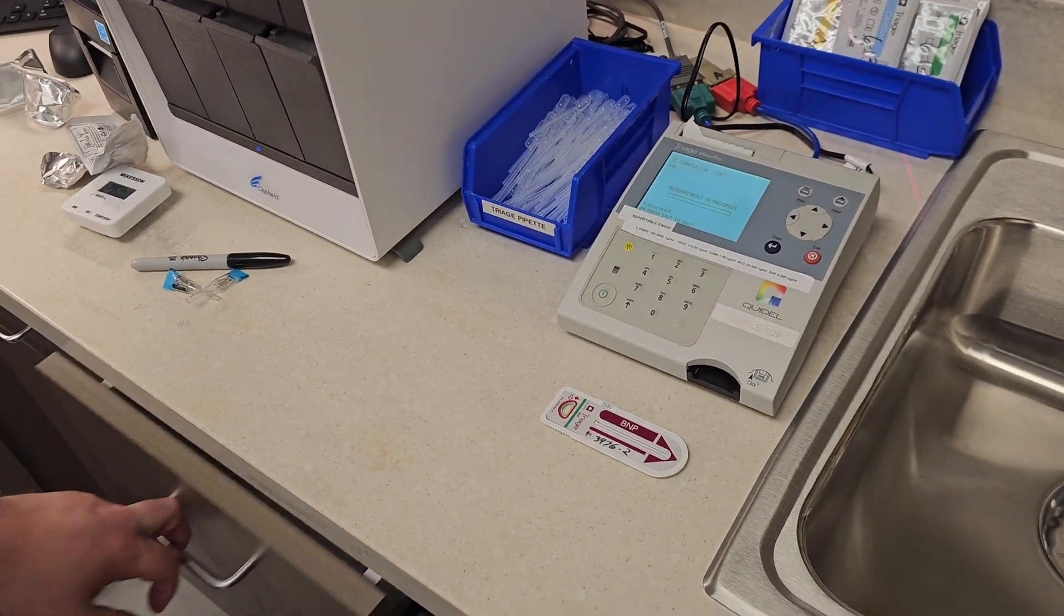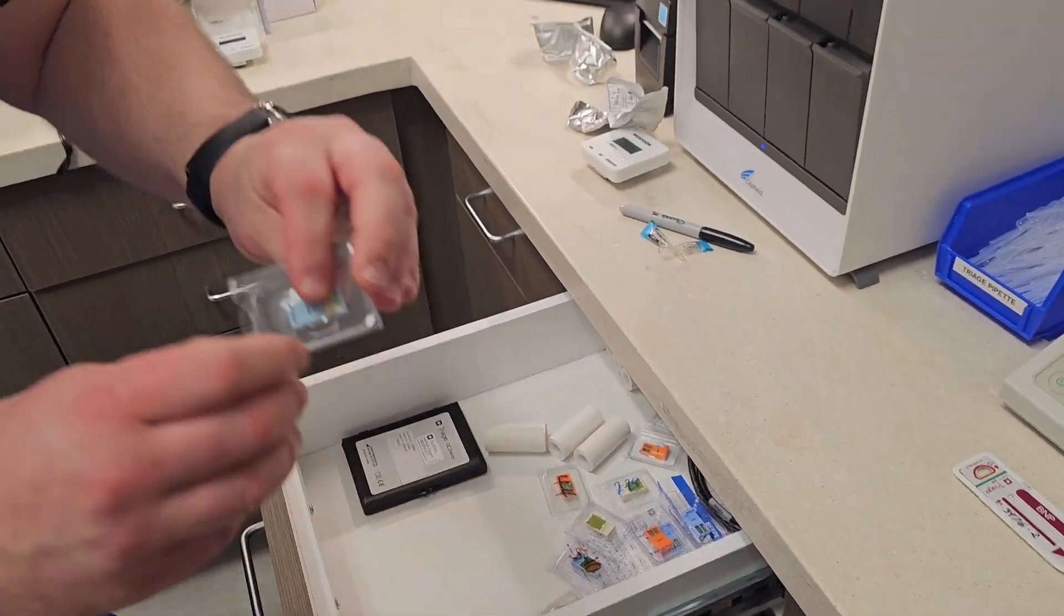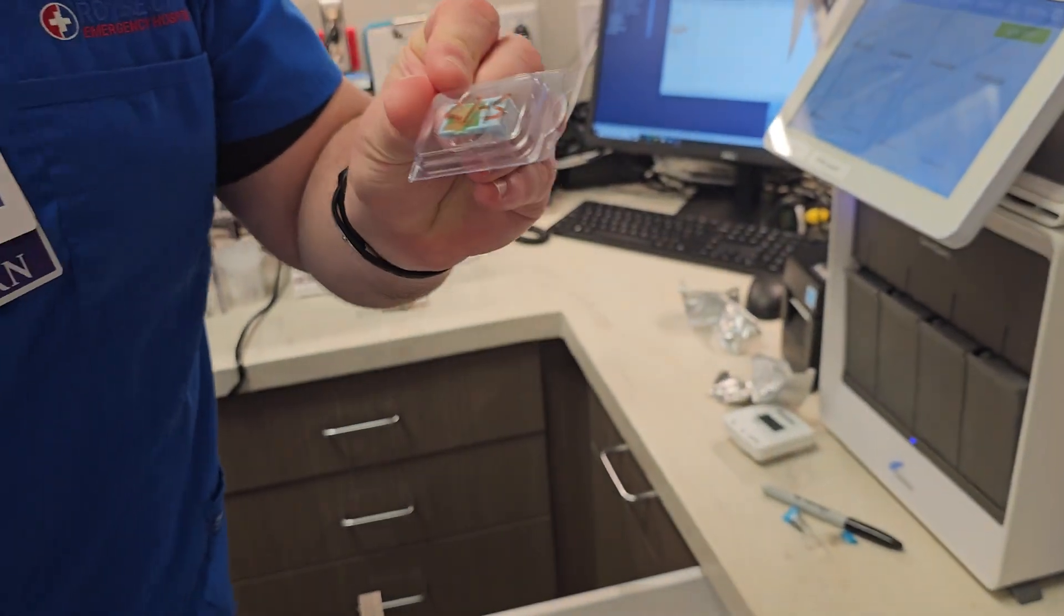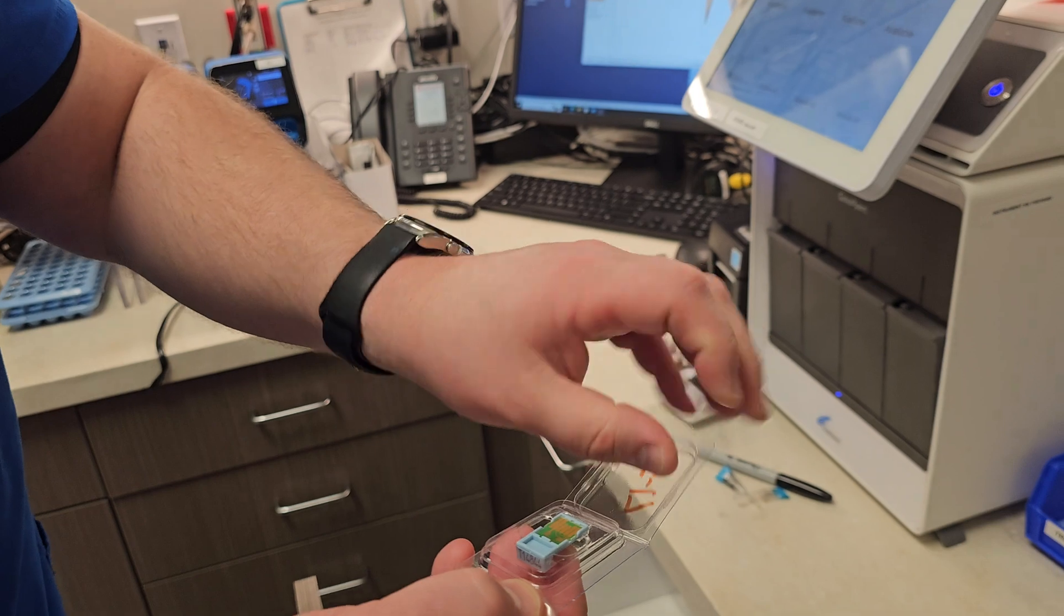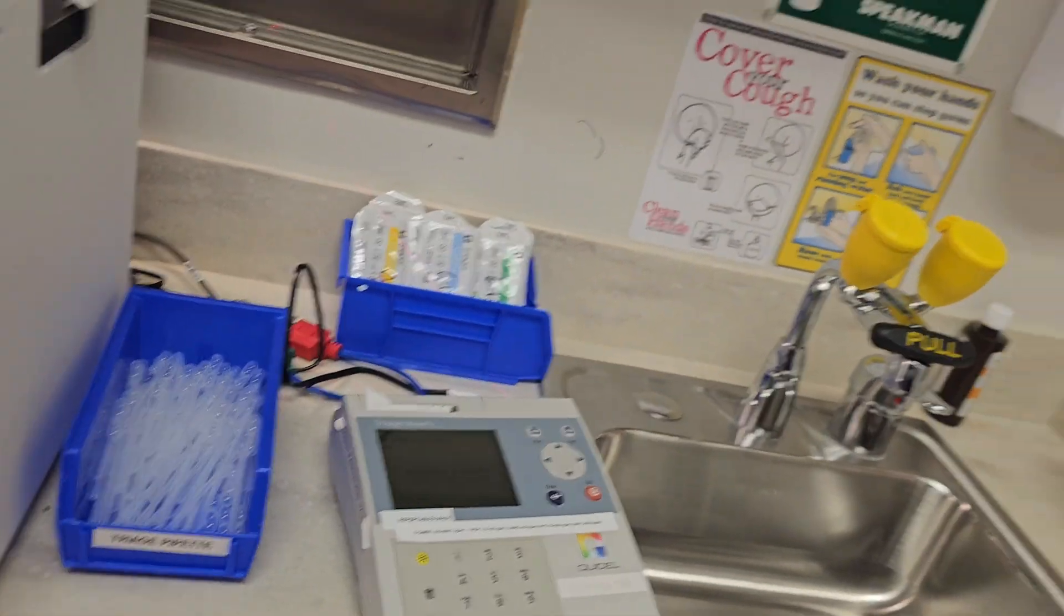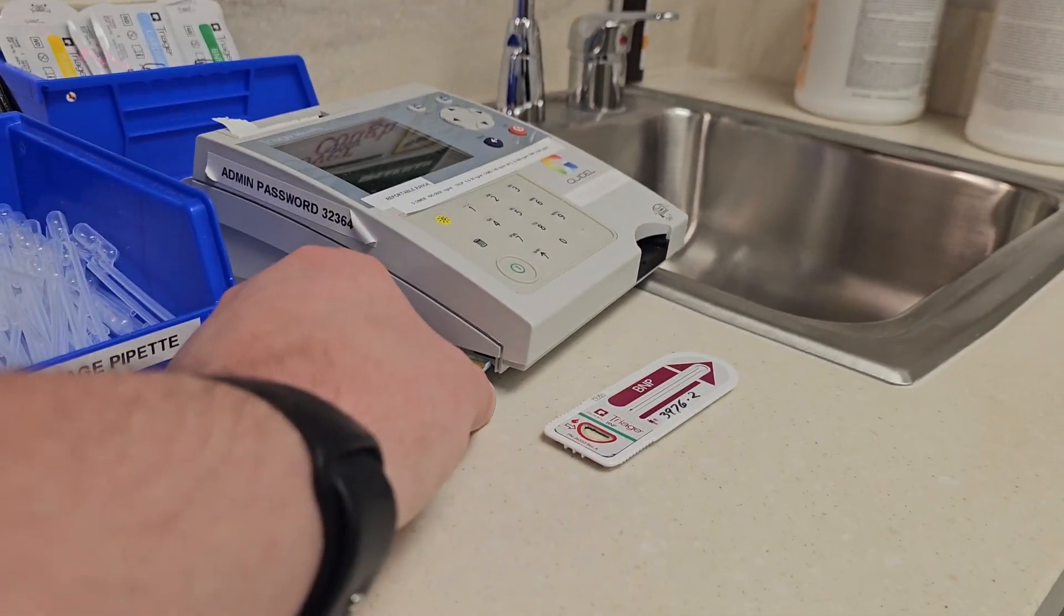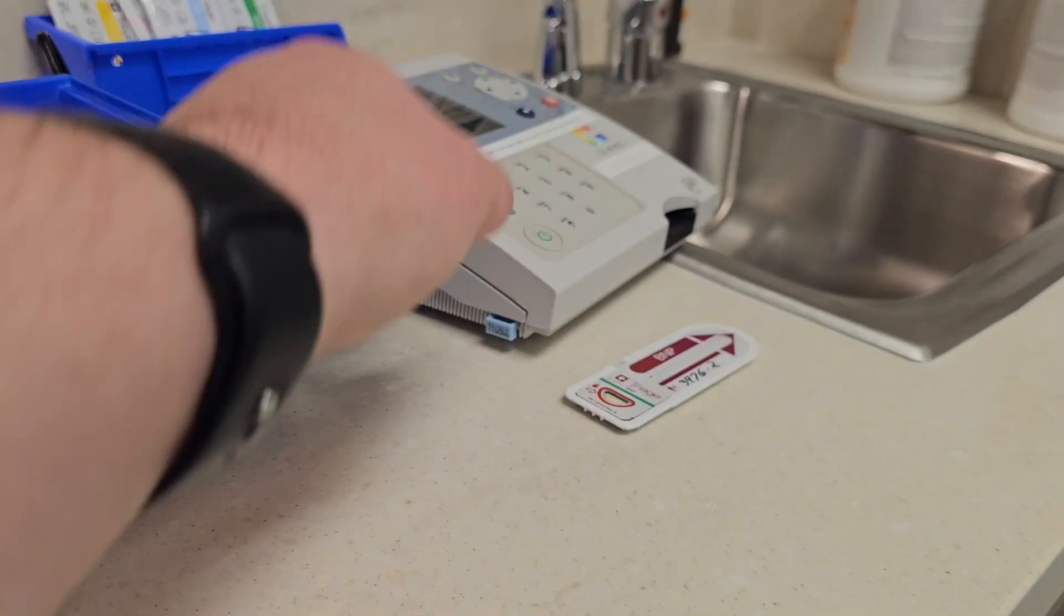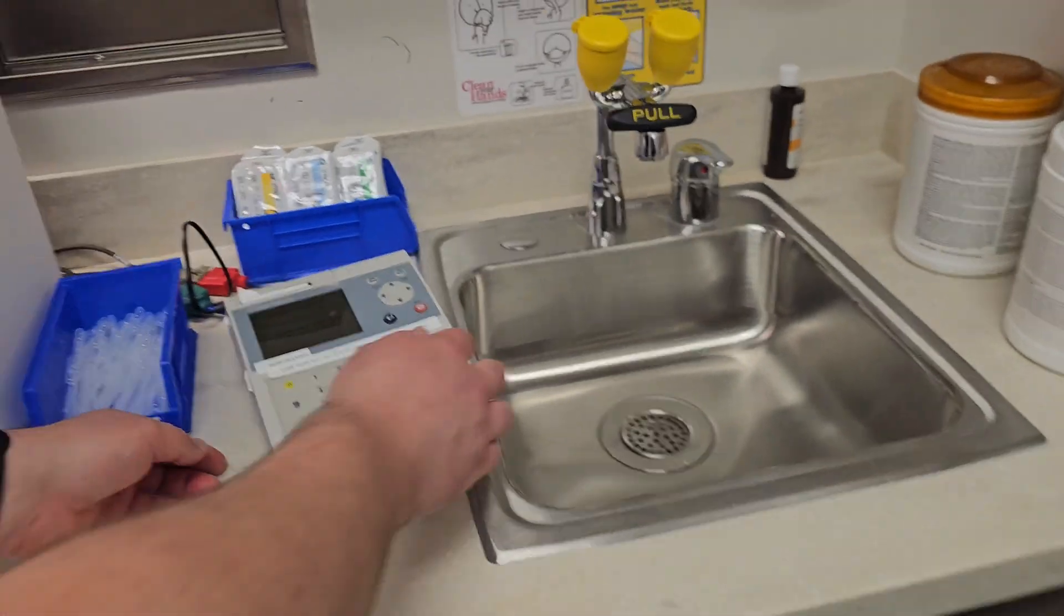That code chip looks like this and it comes inside the box. If the machine asks you to install the code chip, you're just going to move your analyzer to the side over here. There's a little space down there where that code chip goes. You'll insert it and then hit enter on the analyzer.